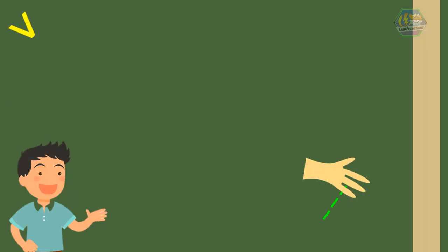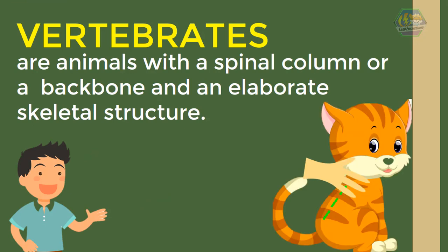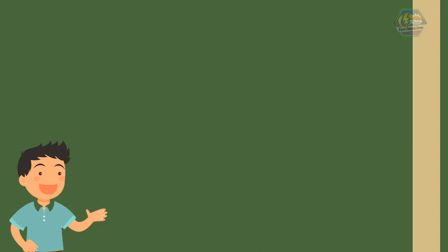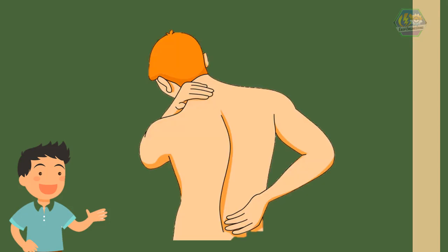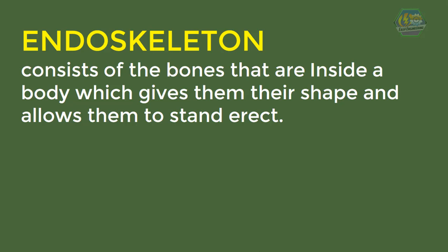Vertebrates are animals with a spinal column or a backbone and an elaborate skeletal structure. You can notice backbones when you touch a cat on its back — that long hard bone. We have it too, because we humans are also animals. Yes, we are animals, but we're the most intelligent, and we're also vertebrates. All vertebrates have an endoskeleton, which consists of bones inside the body that give them their shape.